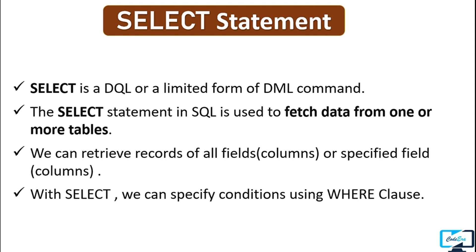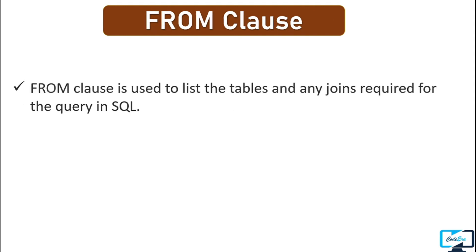You can also fetch specific rows by specifying conditions using the WHERE clause. When we talk about the SELECT command, it comes with the FROM clause. The FROM clause is used to list the table name in the query, allowing us to specify the name of one or more tables from which we want to fetch data. It also helps in adding joins to the query.